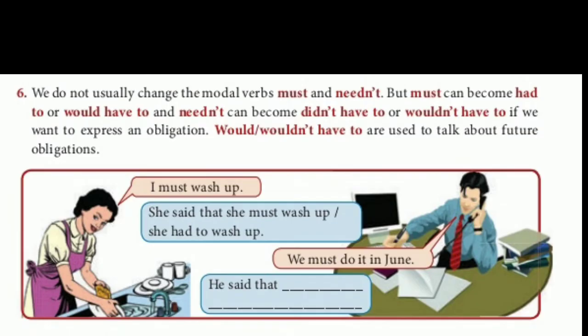Sixth case: we do not usually change the modal verbs 'must' and 'needn't'. But 'must' can become 'had to' or 'would have to', and 'needn't' can become 'didn't have to' or 'wouldn't have to' if we want to express an obligation. For example, 'I must wash up' — she said that she must wash up or she had to wash up. 'We must do it in June' — he said that they must do it in June, or that they had to do it in June.